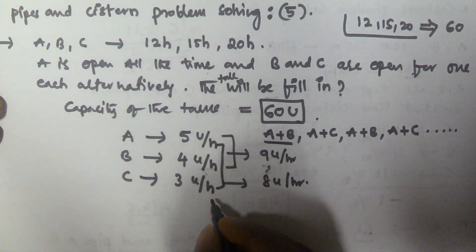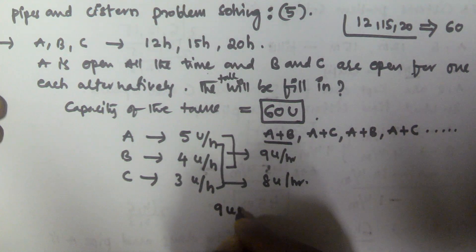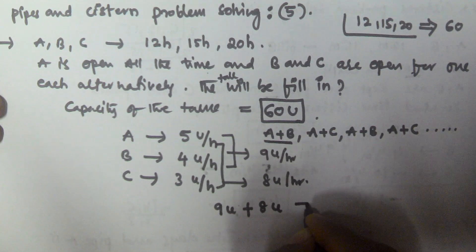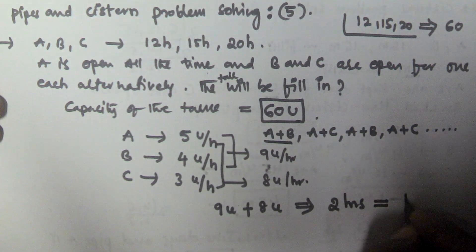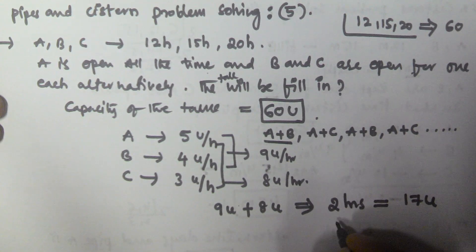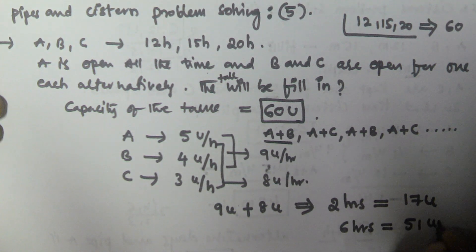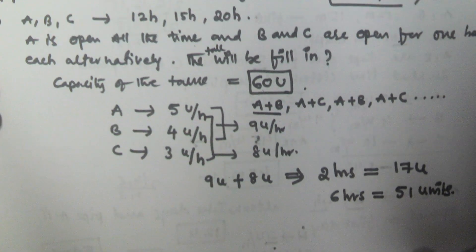So in the first hour A and B together finish 9 units, and in the second hour A and C finish 8 units. That means in 2 hours we are finishing 17 units. Multiplying by 3, in 6 hours we will finish 51 units. The total capacity is 60 units, so we finish 51 units in 6 hours.